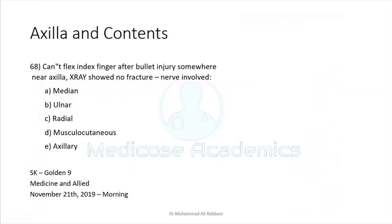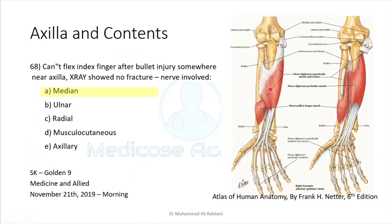A person cannot flex the index finger after a bullet injury near the axilla, with X-ray showing no fracture. Flexor digitorum superficialis is supplied by the median nerve. Flexor digitorum profundus is supplied by both median and ulnar nerves, but the fibers supplying the index and middle fingers are supplied by the median nerve. Therefore, if the median nerve is damaged, complete flexion of the index finger is lost. The answer is the median nerve.